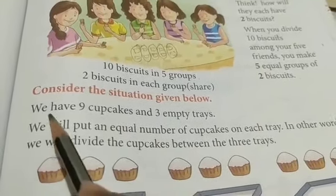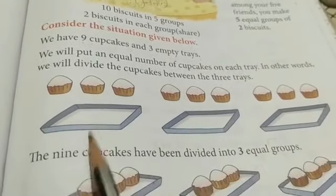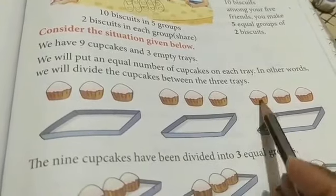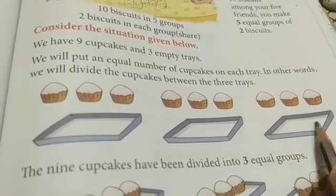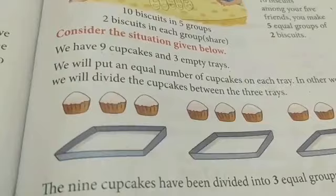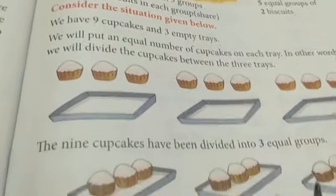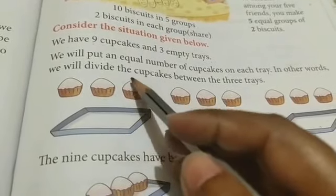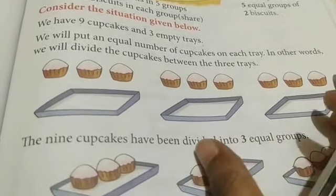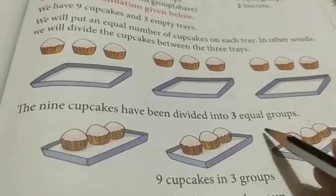Consider the situation given below. We have 9 cupcakes and 3 empty trays. Look here — count the 9 cupcakes: 1 through 9. And there are 3 empty trays: 1, 2, 3. We will put an equal number of cupcakes on each tray. In other words, we will divide the 9 cupcakes between the 3 trays. The 9 cupcakes have been divided into 3 equal groups.